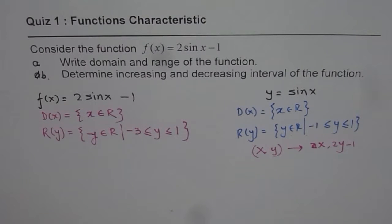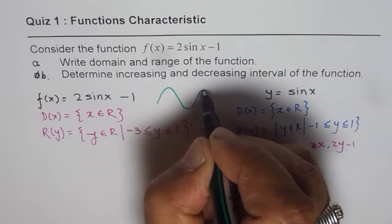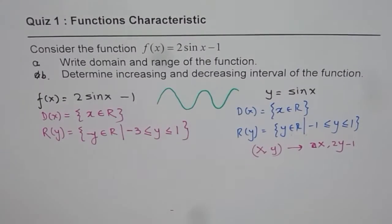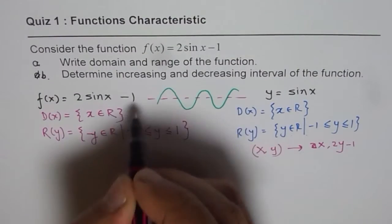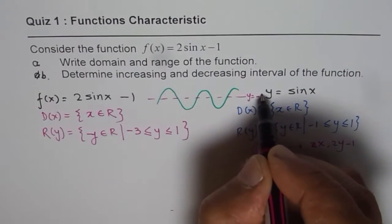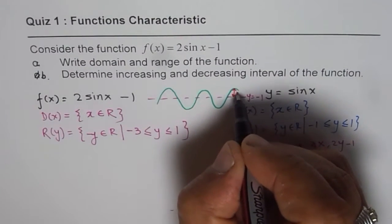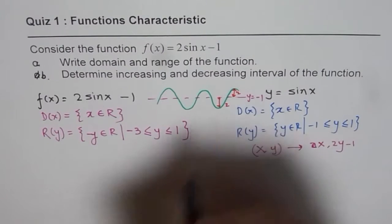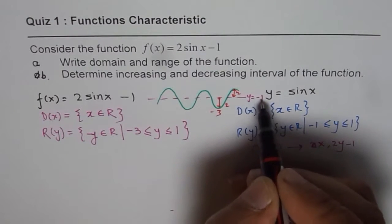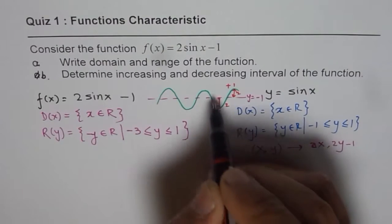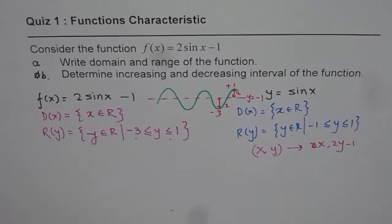That is one way of doing it. Another way is to sketch the function. We sketch the sine wave, where 2sin(x) − 1 means the axis of symmetry is at y = −1 and the amplitude is 2. So going 2 units down from −1 gives −3, and going 2 units up gives +1. The range is between −3 and +1 — the same result.